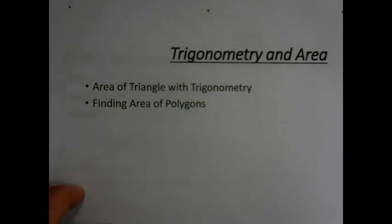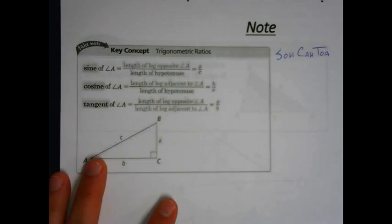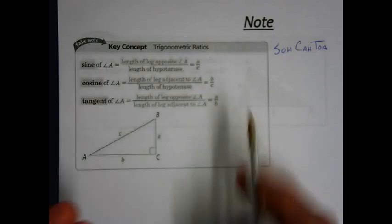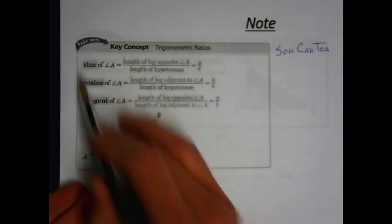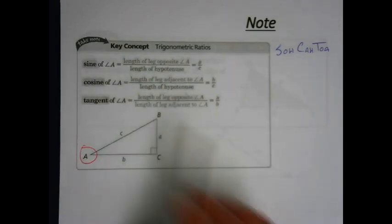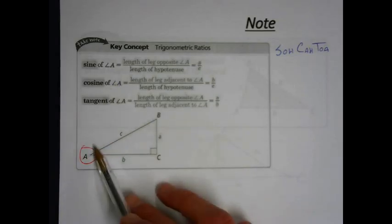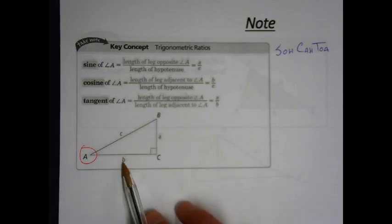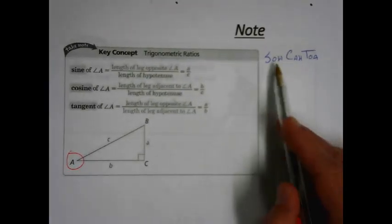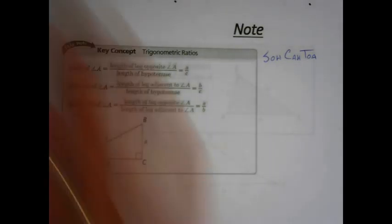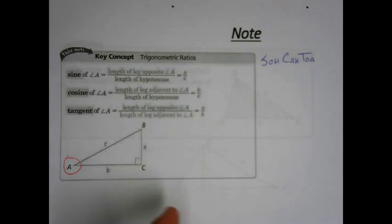Let's jog our memories when it comes to trigonometry super quick. We have to remember right triangles and trigonometric ratios of the segment lengths in reference to a particular angle of that triangle. In this set of notes, we're talking about angle A. The sine is the opposite side over the hypotenuse. The cosine is the adjacent leg over the hypotenuse. And then the tangent is the opposite leg over the adjacent leg. Remember good old SOH-CAH-TOA. This is a quick review of what we did back in chapter 8 — so if this is confusing, stop and go back to chapter 8.